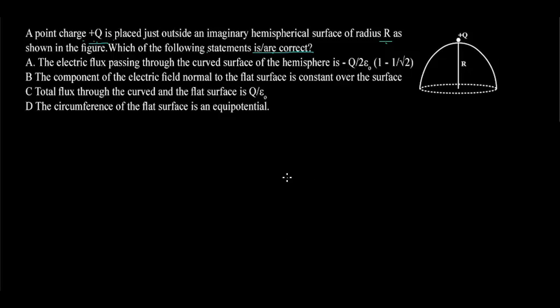Now let us see the solution to this question. For option A, the formula for electric flux passing through a curved surface is given by flux psi equal to minus Q by 2 epsilon naught into 1 minus cos theta. Since theta equal to 45 degrees for this curved surface, that gives us flux equal to minus Q by 2 epsilon naught into 1 minus 1 by root 2. Our option A is true.